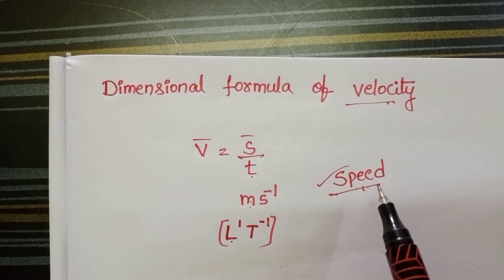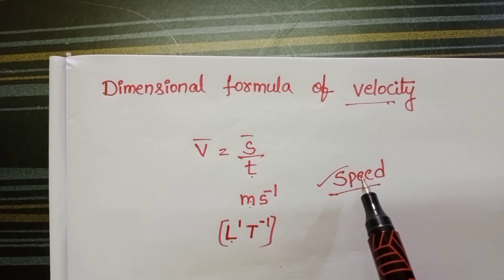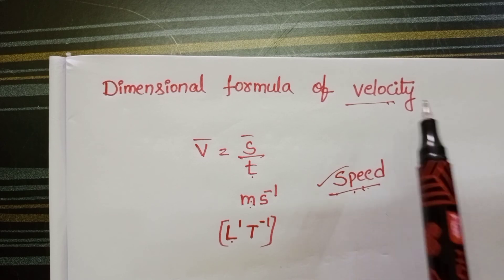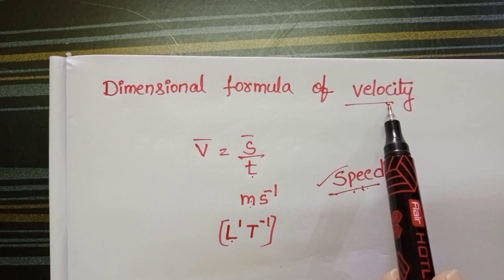Why? Because both speed and velocity have the same units and dimensions. The only difference is speed is a scalar quantity. Velocity is a vector quantity.